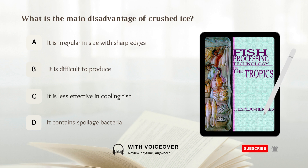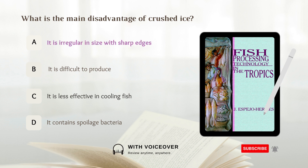What is the main disadvantage of crushed ice? A. It is irregular in shape with sharp edges. B. It is difficult to produce. C. It is less effective in cooling fish. D. It contains spoilage bacteria. The answer is A — it is irregular in size with sharp edges.